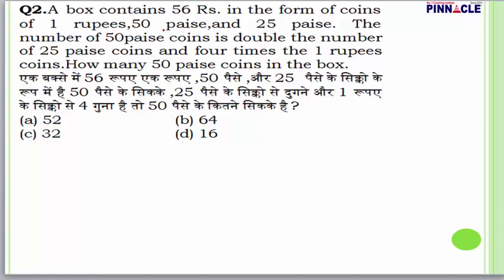Question number 2: A box contains 56 rupees in the form of coins of 1 rupee, 50 paisa, and 25 paisa. The number of 50 paisa coins is double the number of 25 paisa coins and four times the number of 1 rupee coins. How many 50 paisa coins are in the box? If 25 paisa coins = x, then 50 paisa coins = 2x, and 1 rupee coins = 0.5x.